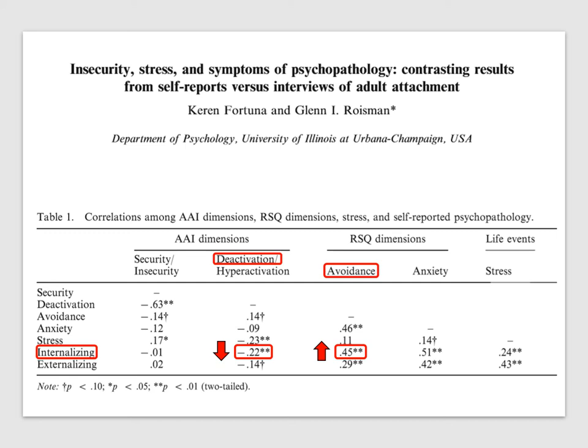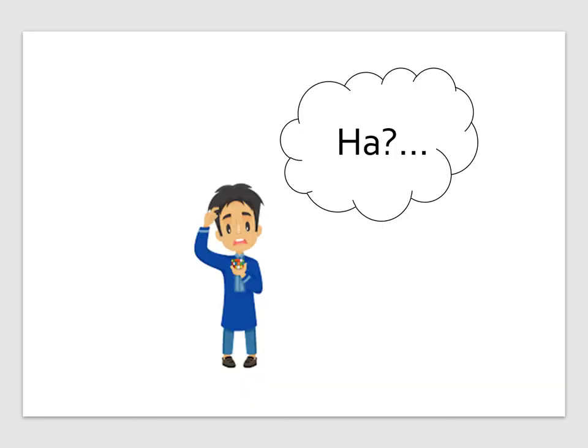However, as you can see on the right column, those who scored higher on the avoidance dimension in the RSQ self-report also tended to endorse significantly more internalizing symptoms. So, taken together, the conundrum reveals itself. That is, depending on the methodological tradition, adult insecure avoidance or dismissing attachment may or may not be linked to internalizing symptoms.